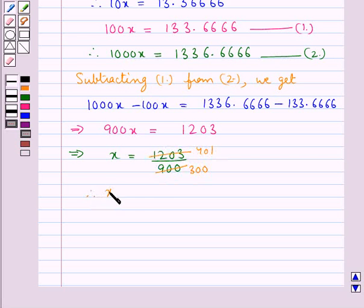Simplifying, we get x is equal to 401 upon 300.